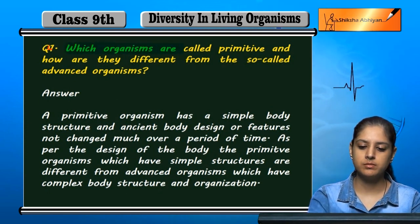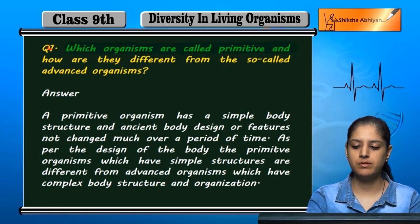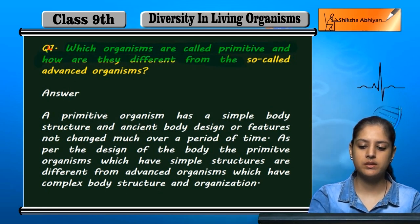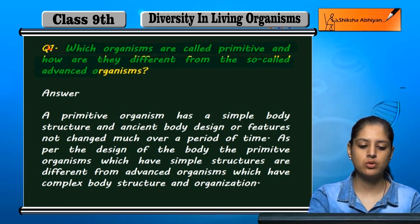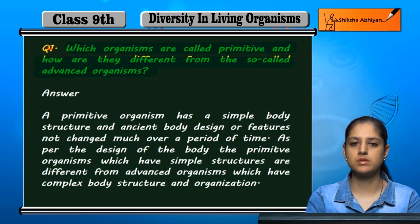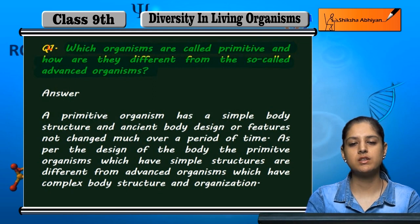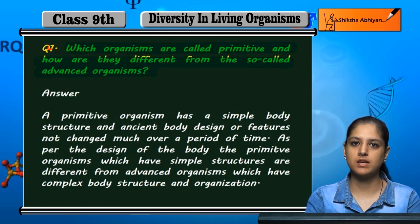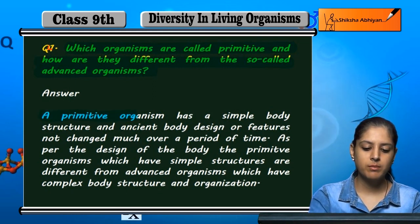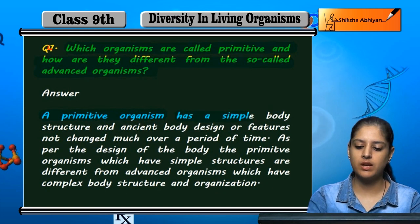Which organisms are called primitive and how are they different from the so-called advanced organisms? Primitive organisms ko kaha jata hai aur woh advanced organisms se alag kis tarah se hai?